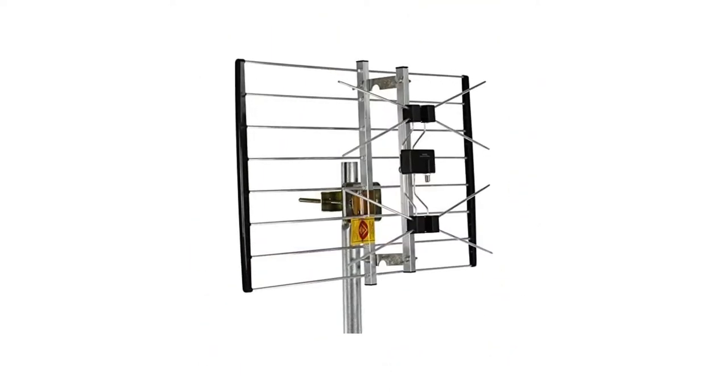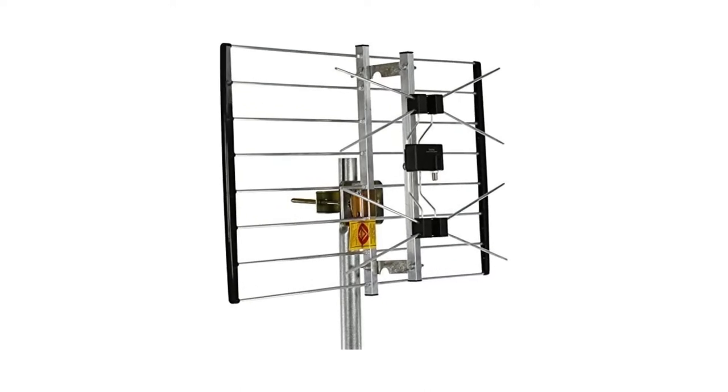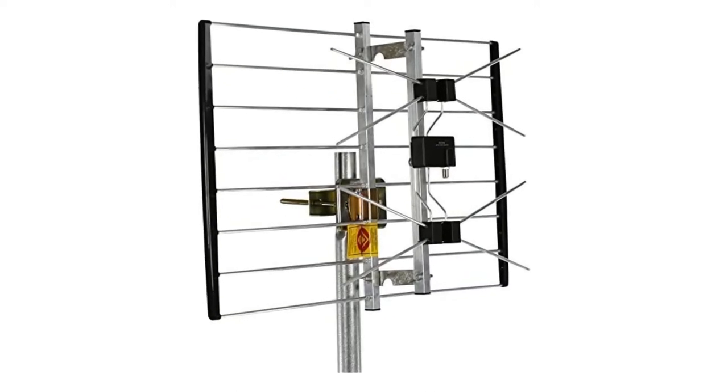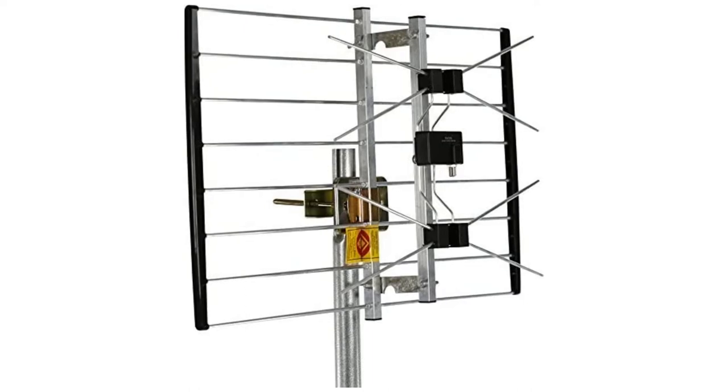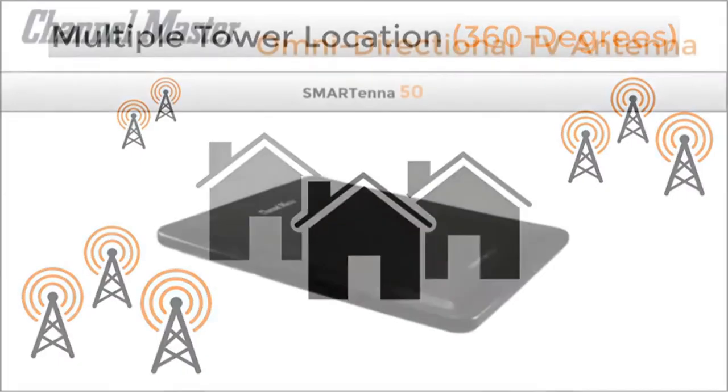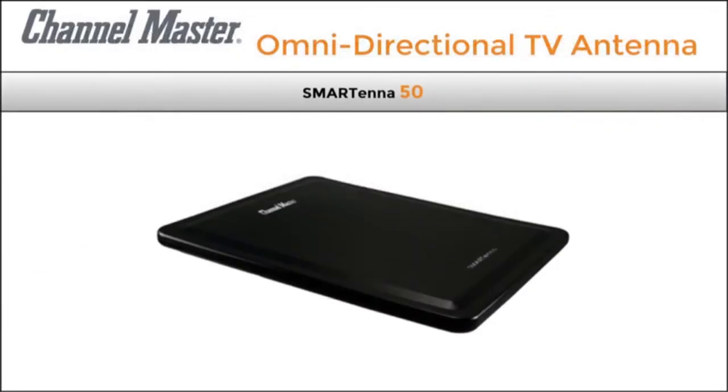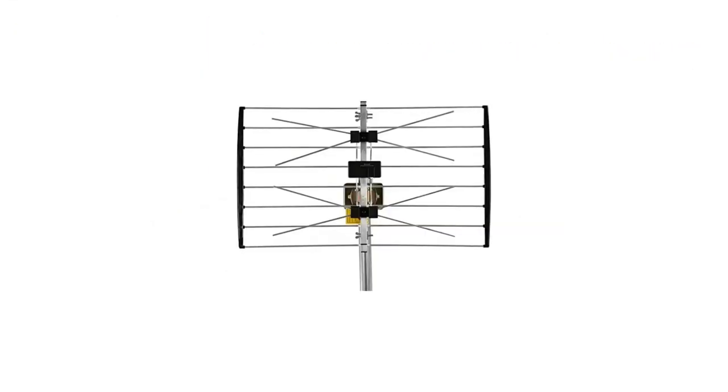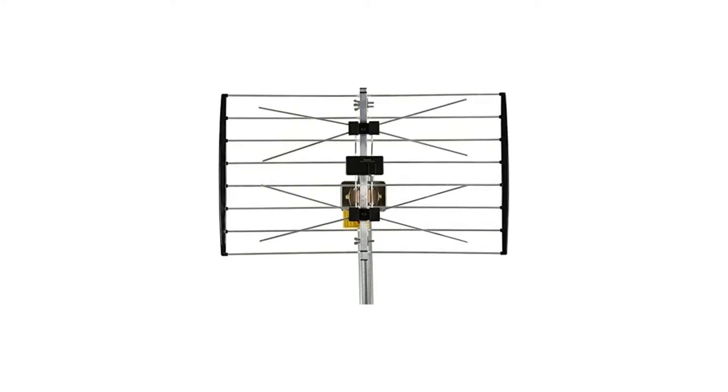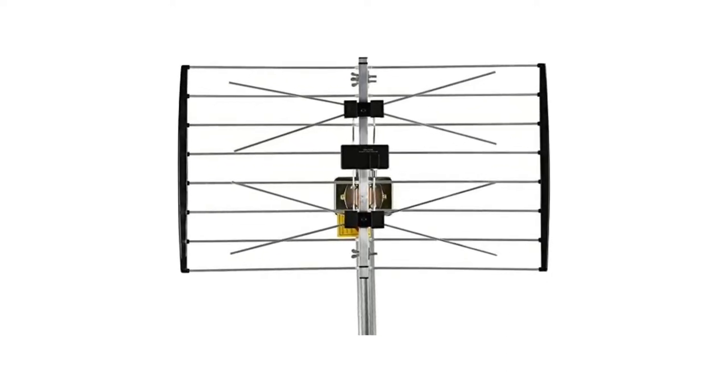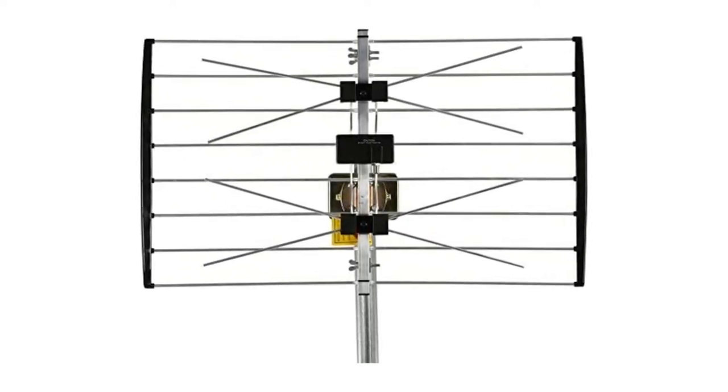Key features: indoor antenna that can be mounted to wall or window or placed upright on a table or entertainment center. Can be placed horizontally or vertically. Includes built-in amplifier for up to 80-mile range. Pros: great antenna performance, amazing reception, offers you lots of programs, amazing signal strength. Cons: no remarkable problems.